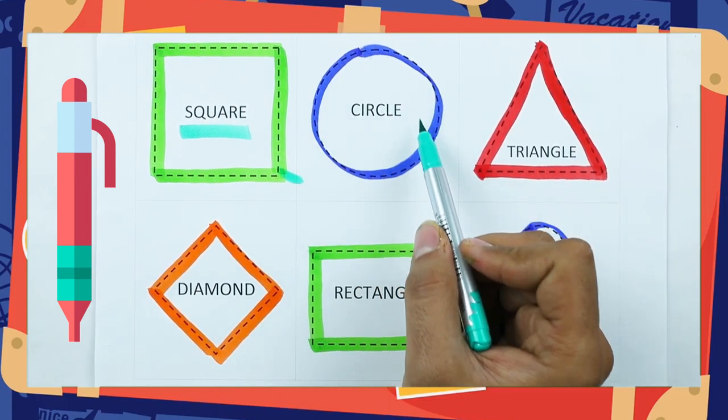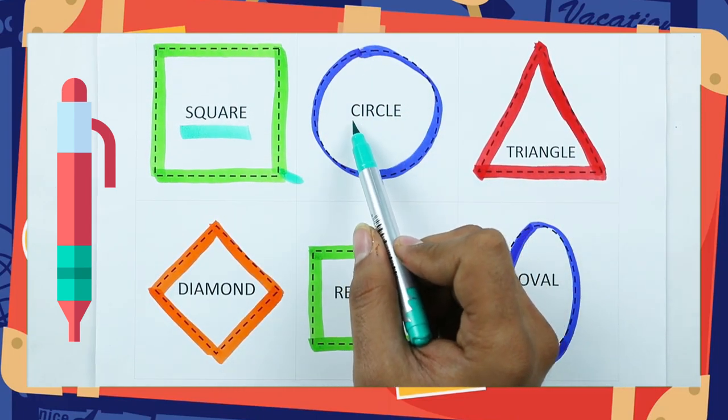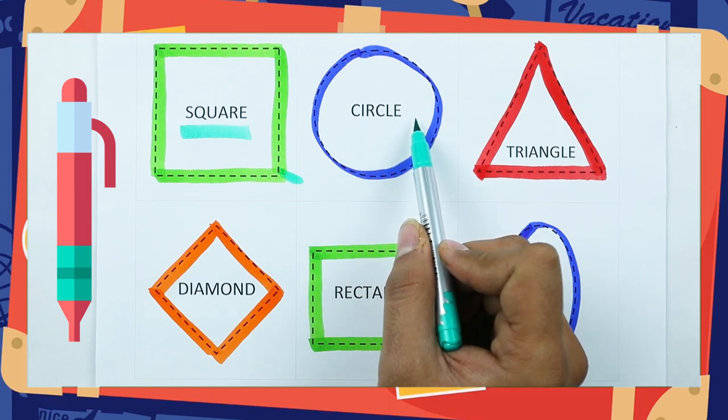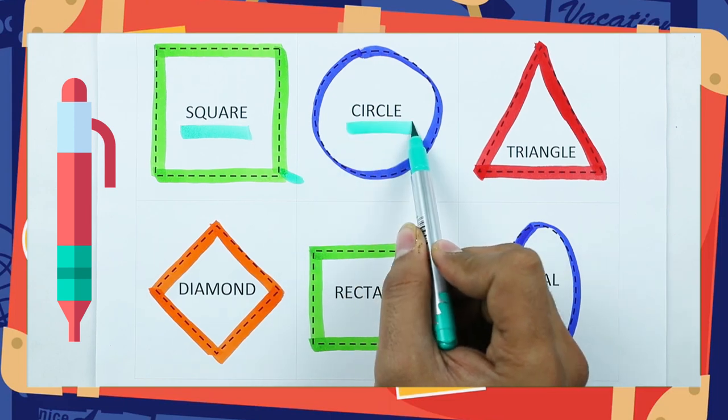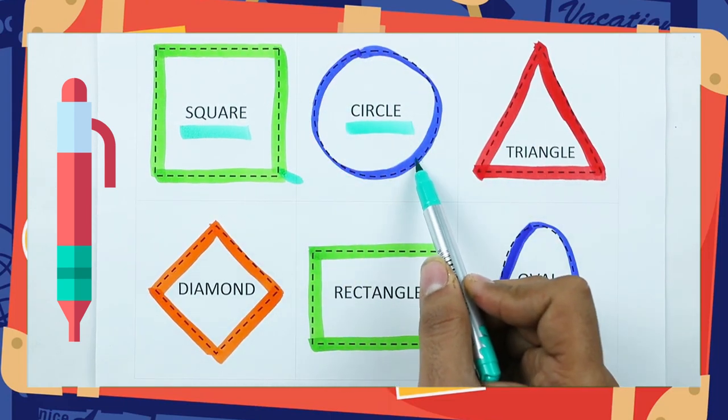Which shape is this? Circle. C-I-R-C-L-E. It's a circle, with blue color.